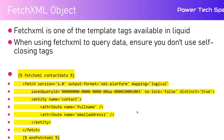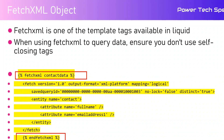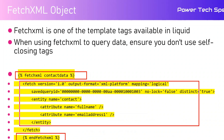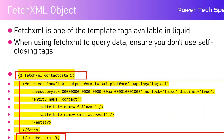FetchXML is one of the template tags available in Liquid. If you want to use FetchXML to query data, ensure that you don't use self-closing tags. The syntax is: open with brace-percent, write 'fetchxml', provide a label, then close with 'endfetchxml'. When you execute the FetchXML code, you will not see any output on your screen because you need to make use of the object and start extracting values from it.